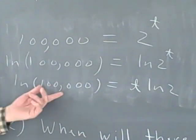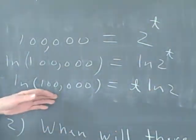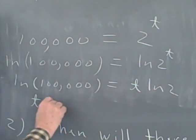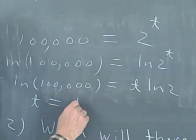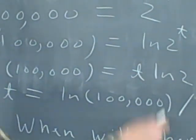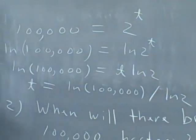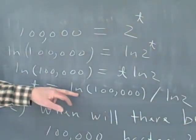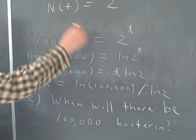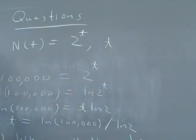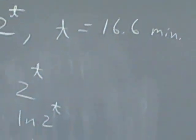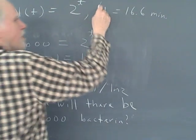It's important to remember that log(100,000) is just a number, so this is a linear equation for t. If we divide both sides by log(2), we get t = log(100,000) / log(2). When you put that in your calculator, the time comes out to 16.6 minutes. So it takes 16.6 minutes for the bacteria to grow from one to 100,000.